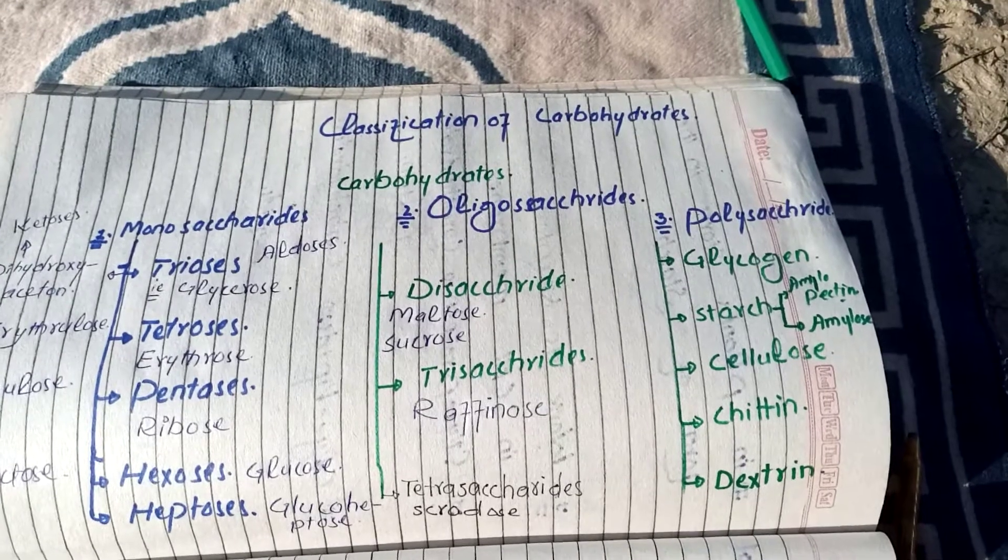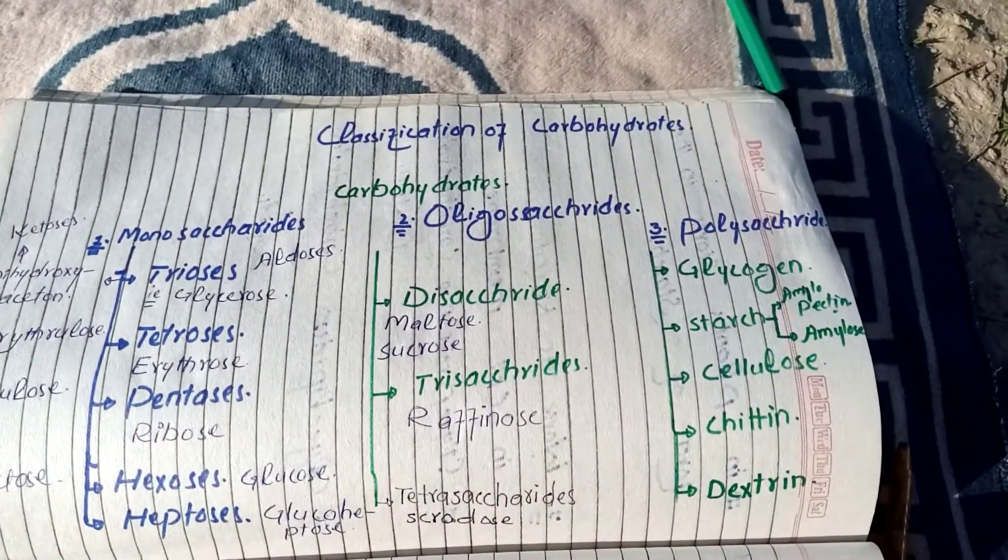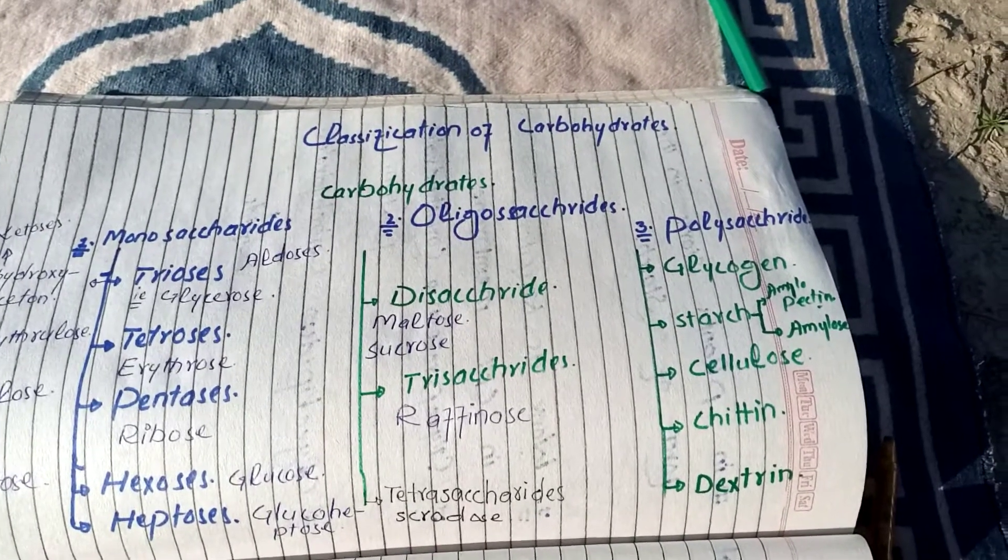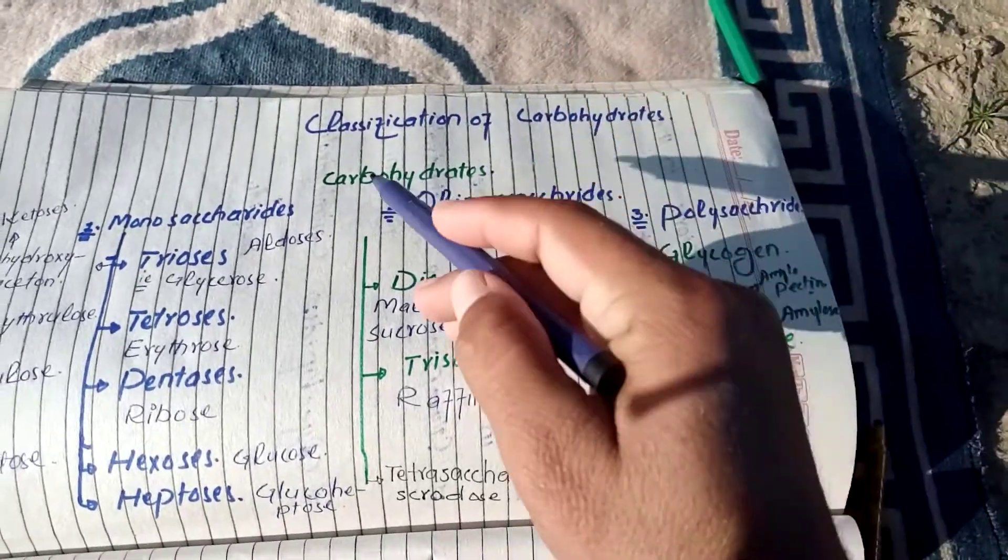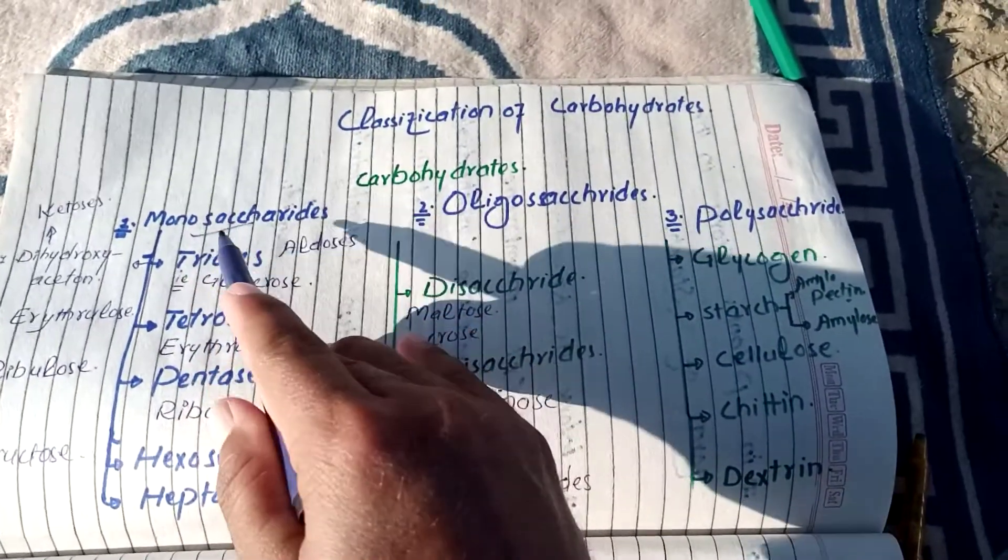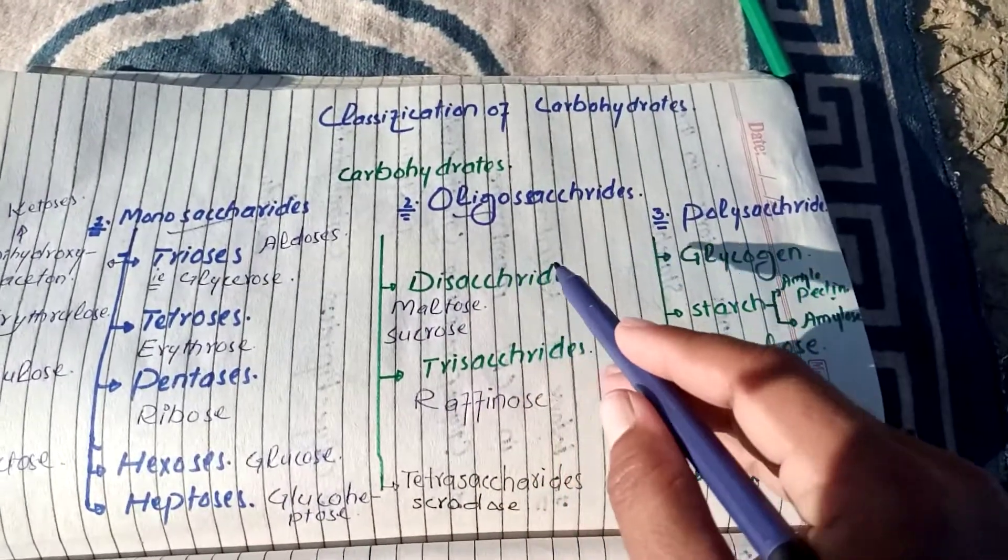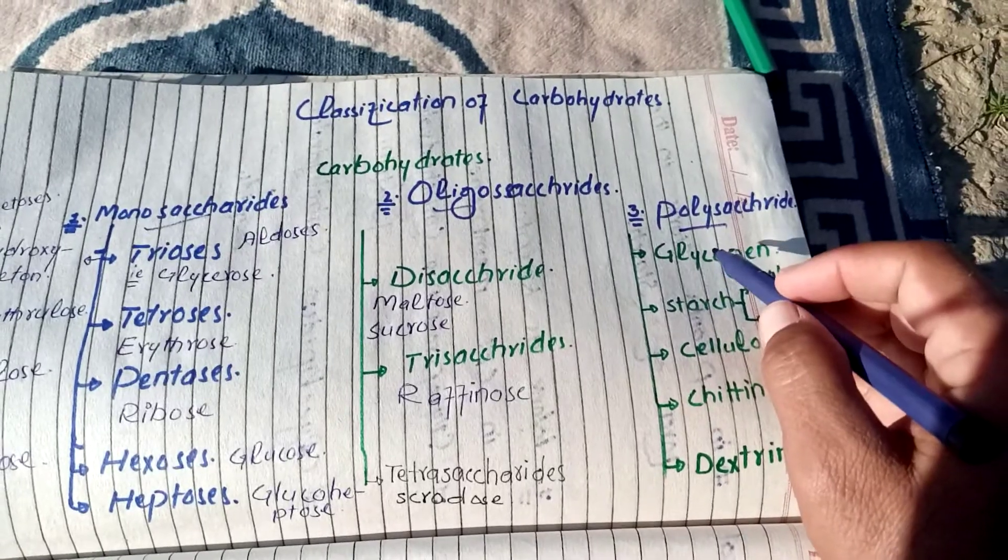Carbohydrates, first of all, on the basis of glucose units or monomers, divide into three classes. First class is monosaccharide. Number second is oligosaccharide. Third number is polysaccharide.